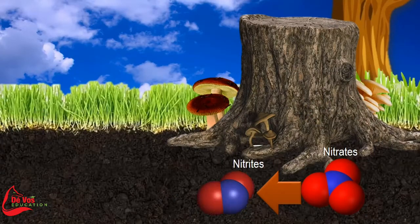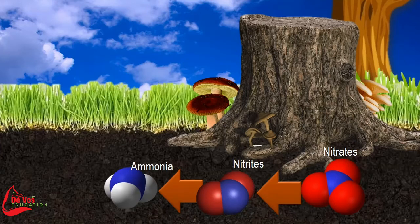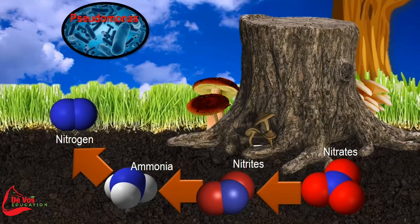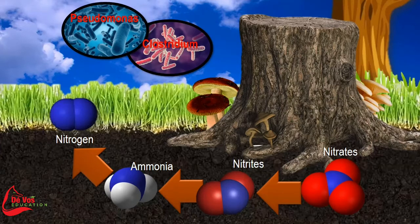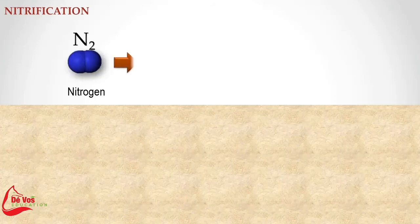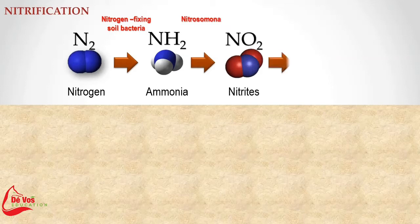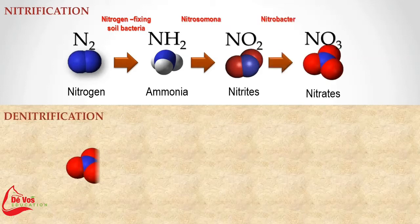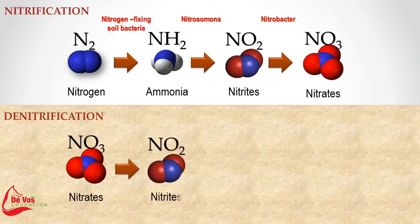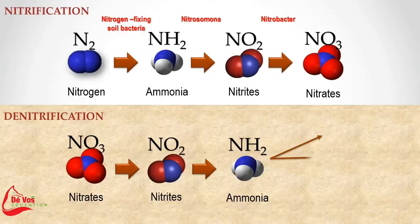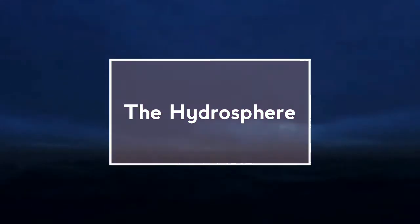During decomposition, bacteria and fungi can break down proteins and amino acids from plants and animals. The denitrification process is where bacteria convert the ammonia and nitrate back into nitrogen and nitrous oxide. The nitrogen is then returned to the atmosphere to start the cycle all over again. So nitrification is when nitrogen gets turned into nitrates through a variety of steps, and denitrification is where the final products are atmospheric nitrogen and nitrous oxide.